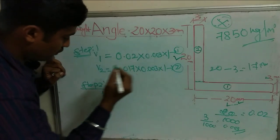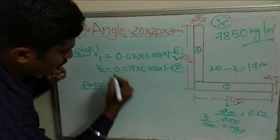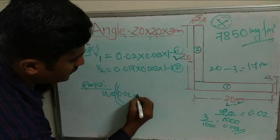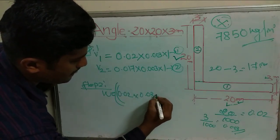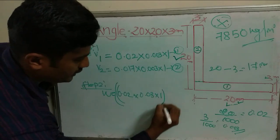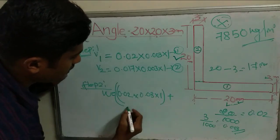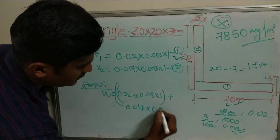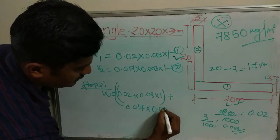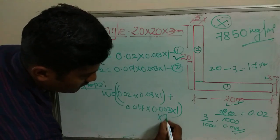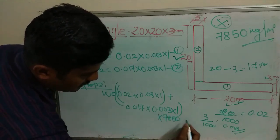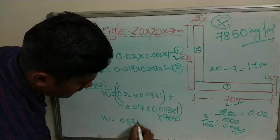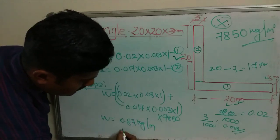Let's calculate. Weight equals: (0.02 × 0.003 × 1) plus (0.017 × 0.01 × 1), all multiplied by the unit weight of 7850 kg/m³. So, weight equals 0.87 kg per meter.